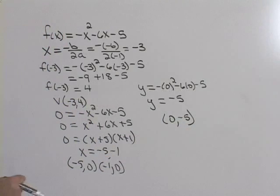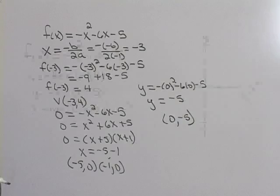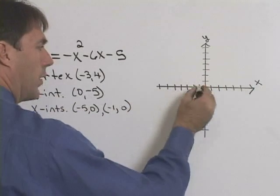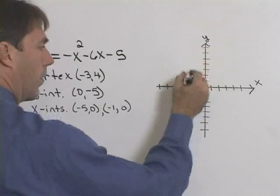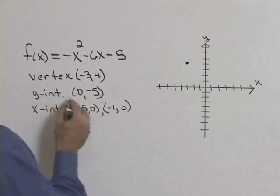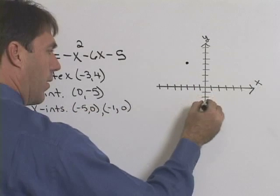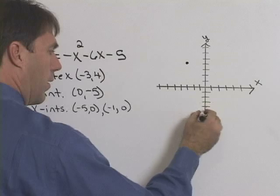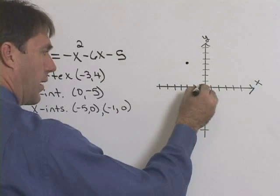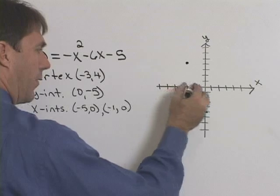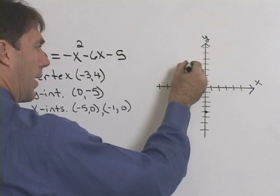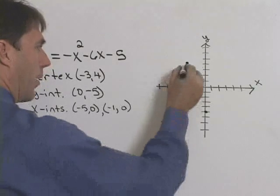Now let's use this information to graph our equation. We know our vertex is (-3, 4). Over here is our vertex. We know that our y-intercept is (0, -5). And we know that our x-intercepts are (-1, 0) and (-5, 0). So we can connect the points and get our parabola.